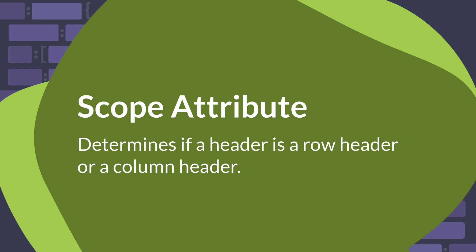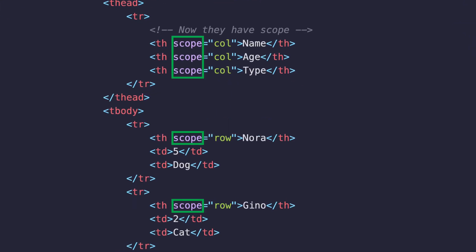Associating the data cells with their corresponding headers is also very important for screen readers. The scope attribute determines if a header is a row header or a column header. Screen readers may guess this correctly from the table structure, but it's usually recommended to explicitly indicate the scope to ensure clarity. The scope attribute has four possible values; the two that you will use most often are col for column and row for row. Here you can see that we added the scope attribute to the column and row headers. The three column headers — name, age, and type — have a scope of col. The two row headers — Nora and Gino — have a scope of row.